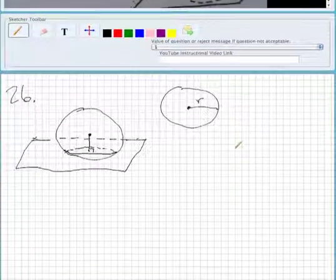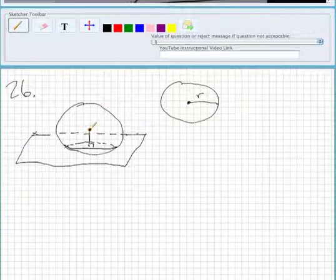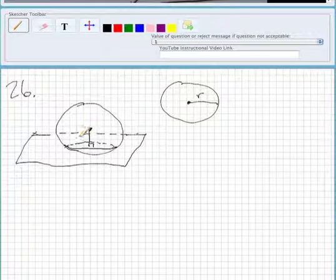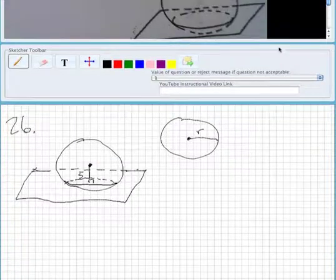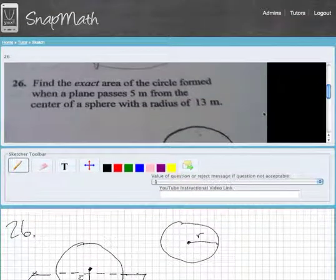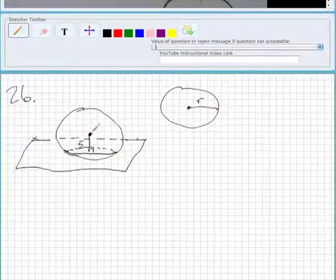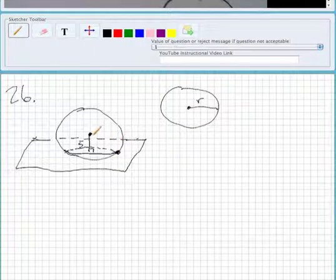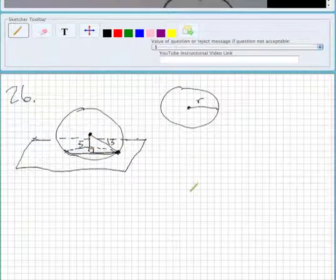So what we do here is we know that from the center of the sphere, the circle is 5 meters away. And then the radius of the sphere from the center to the point on the end of the circle is 13. So what we need to do is we need to find this length from the center of the circle to the edge of the sphere.